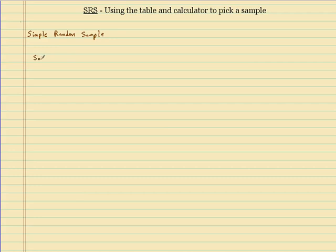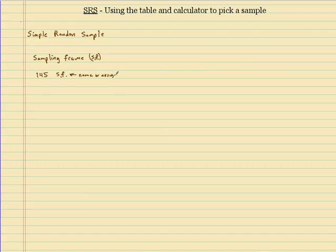So let's say we have a sampling frame. Remember, this is the list of individuals that you're going to choose your sample from. Everybody in the sampling frame has a name and you have to assign a number to each person.